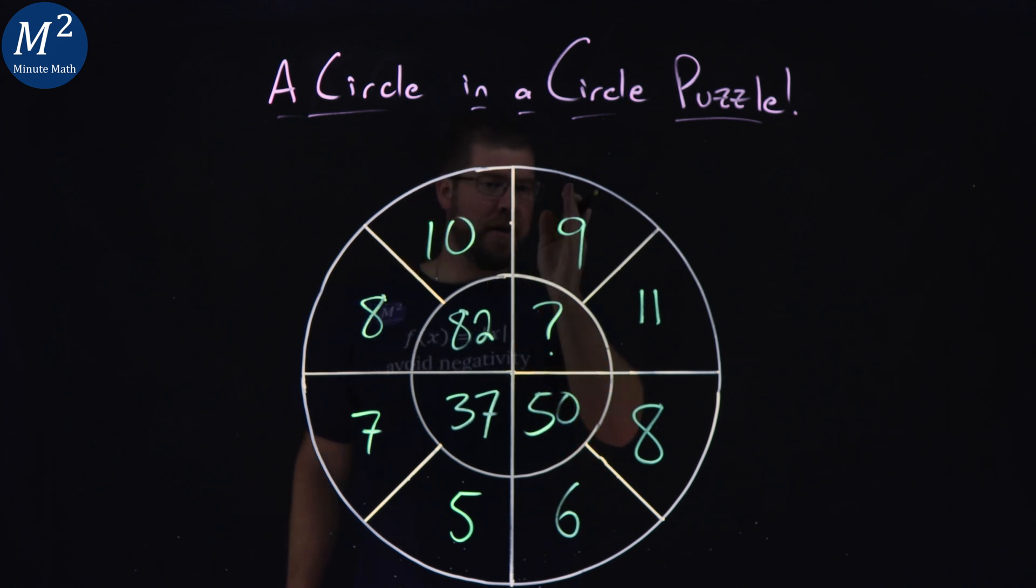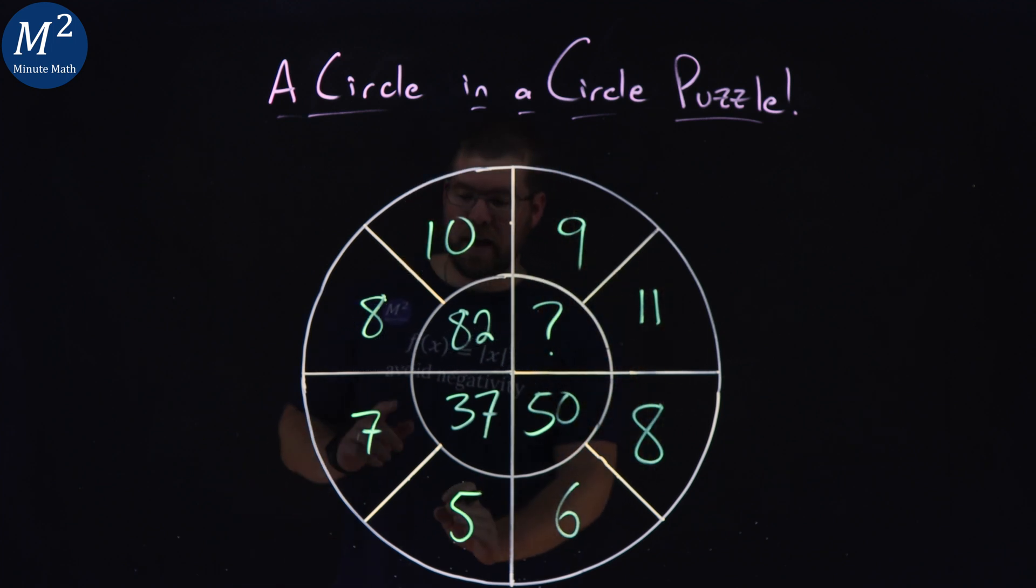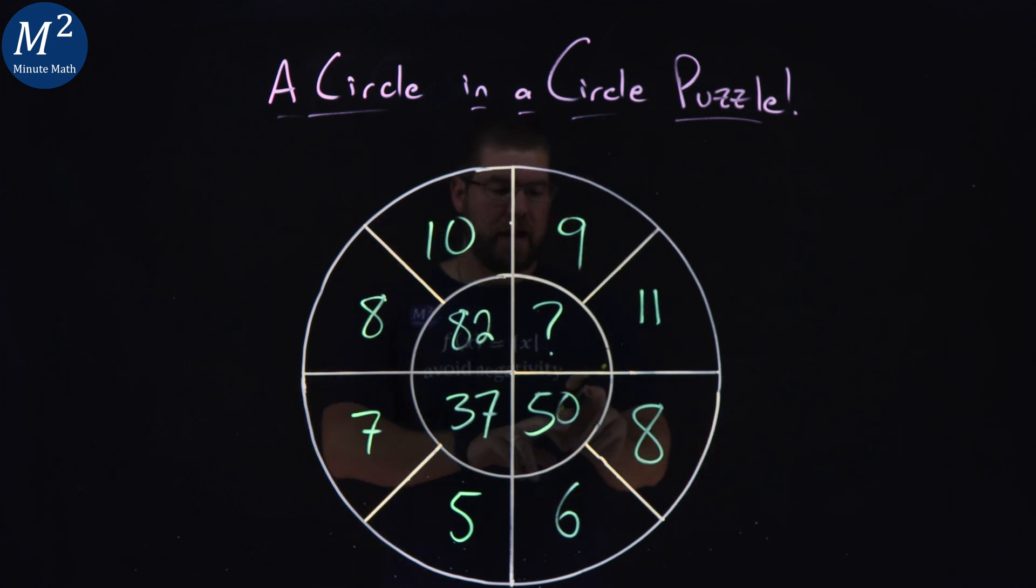Starting from, let's go right here, 9, 11, 8, 6, 5, 7, 8, 10, inner circle. We don't know what that question mark is but we have 50, 37, 82.